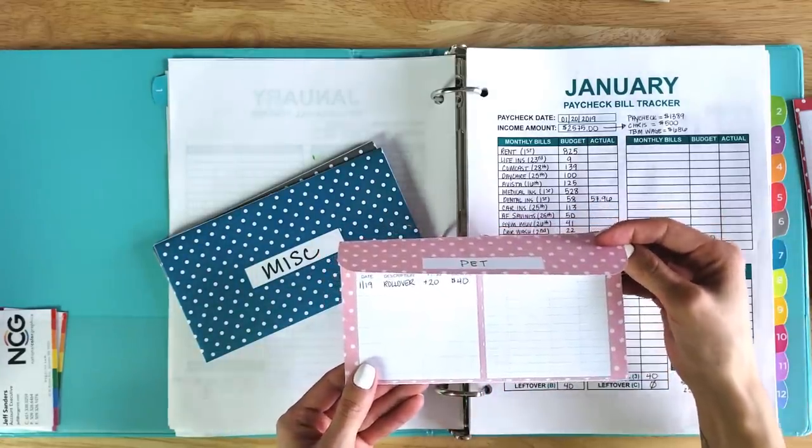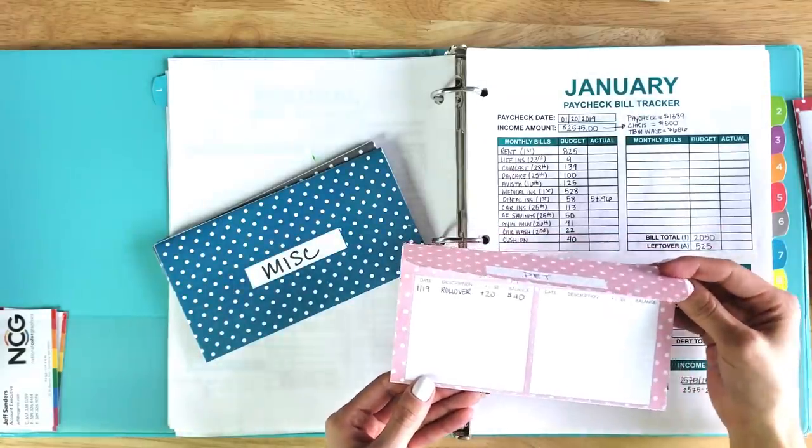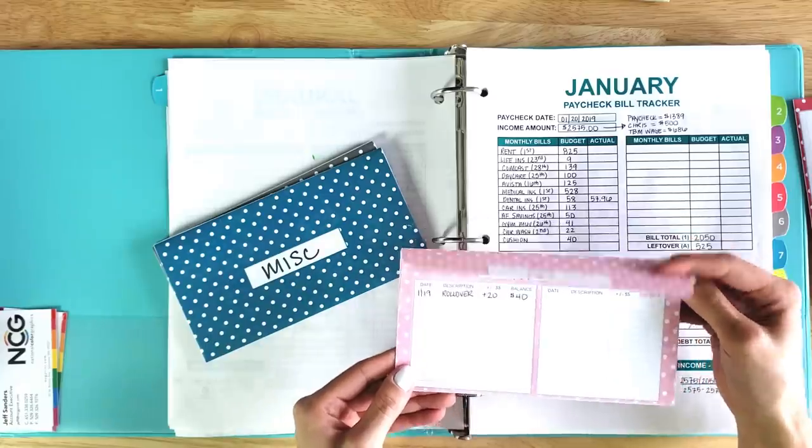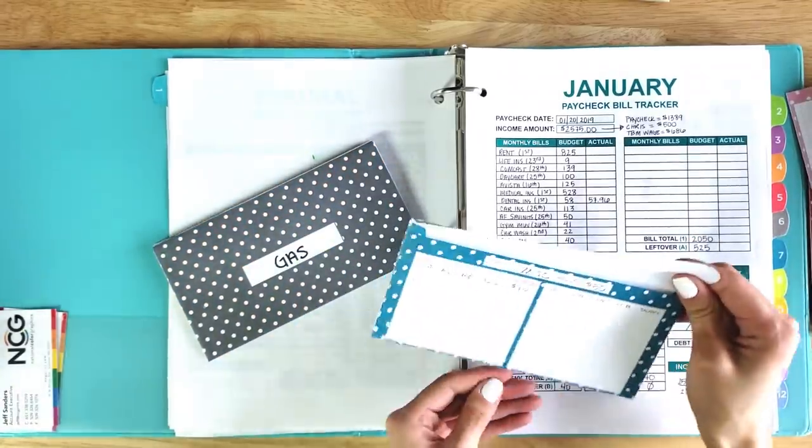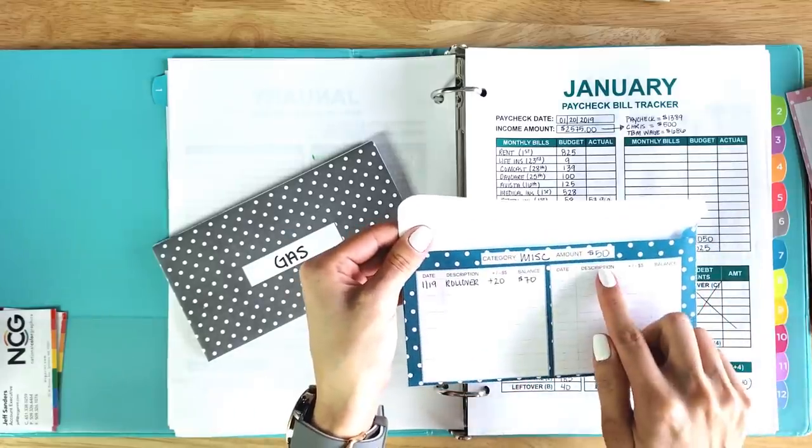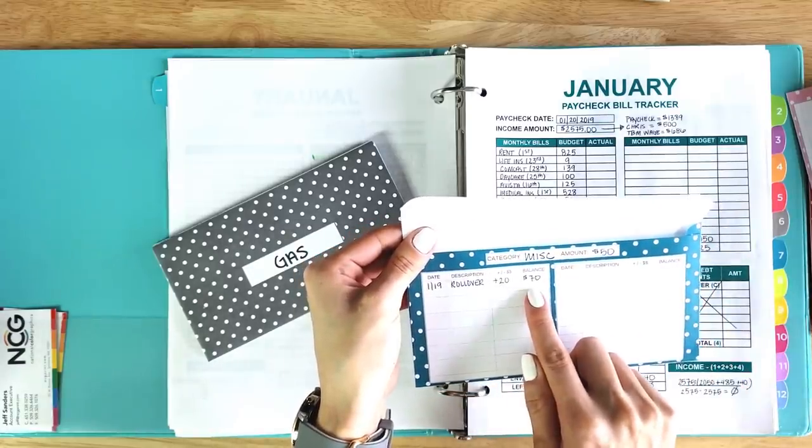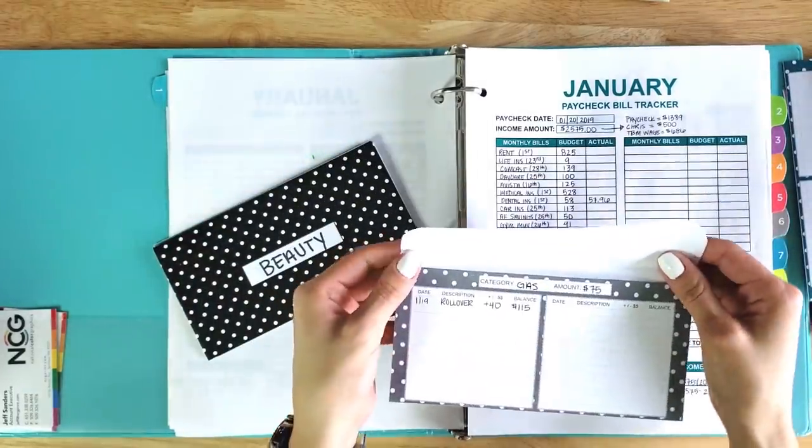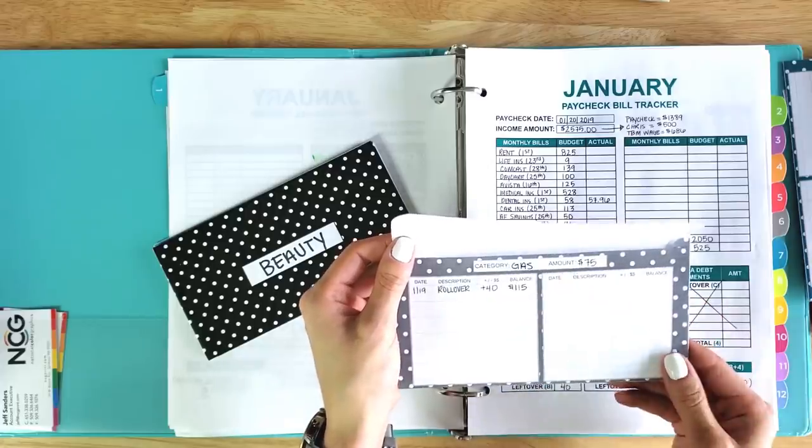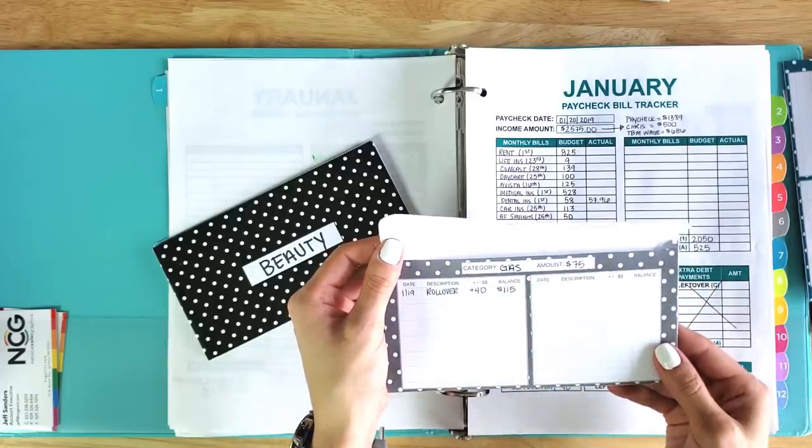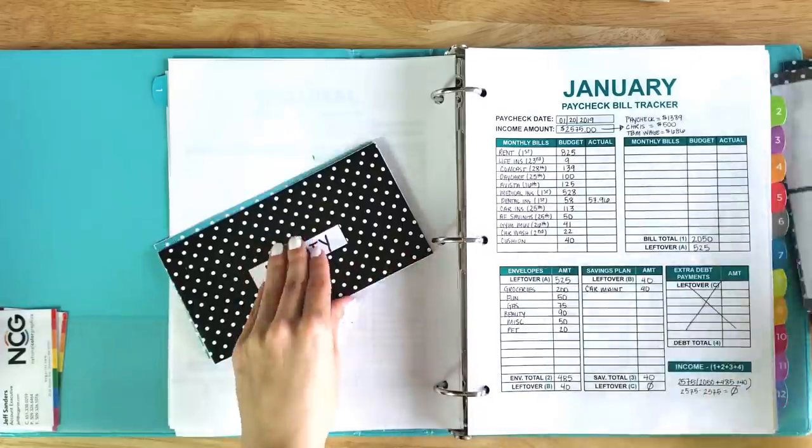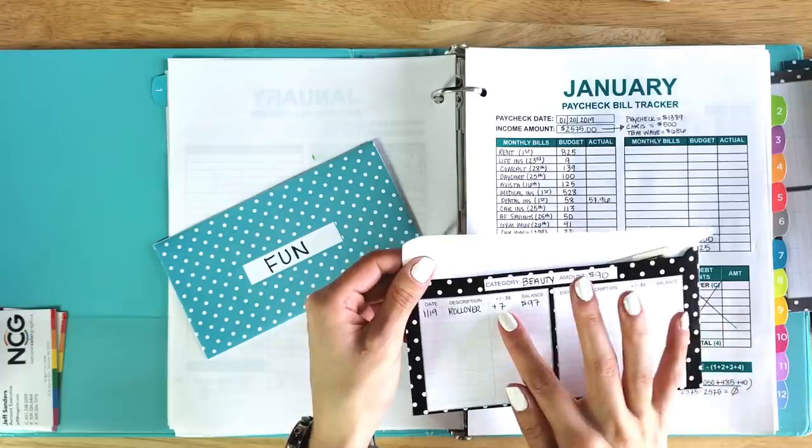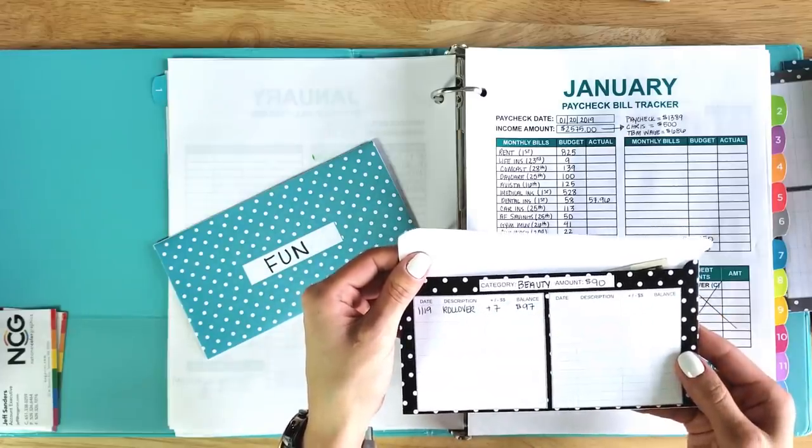That way, when I go to spend money from that envelope, I know exactly how much I have to spend. That's the great thing about the cash envelope method. It's a visual method. My miscellaneous, I budgeted $50, but I rolled over $20, which gives me a new balance of $70. Gas, I budgeted $75, but I rolled over $40, which gave me a new balance of $115. Beauty, I budgeted $90, but I rolled over $7, which gives me a new balance of $97.